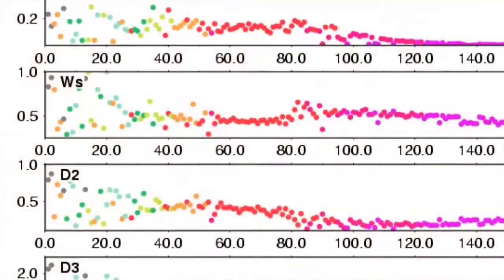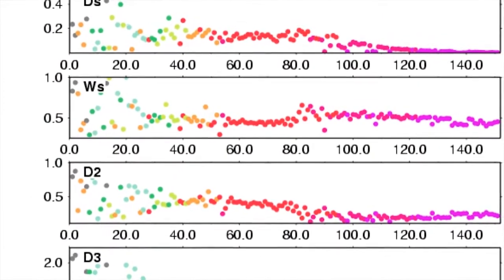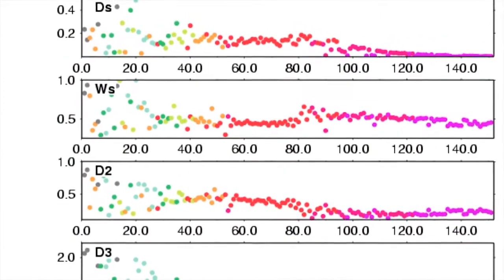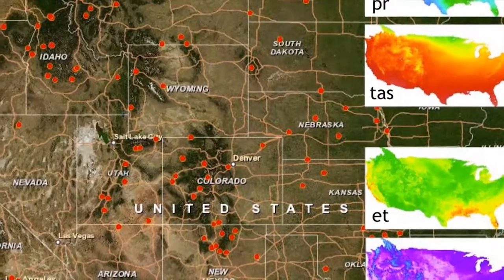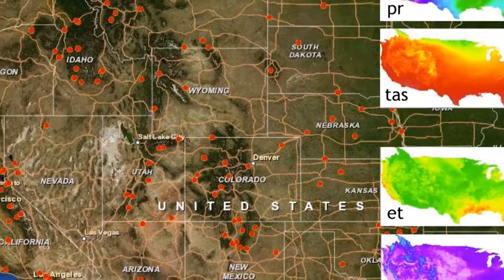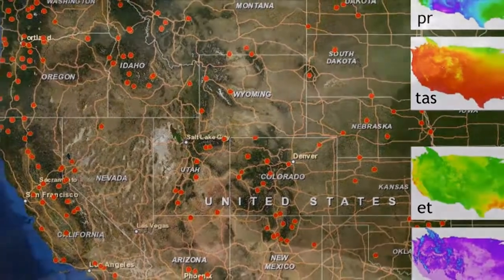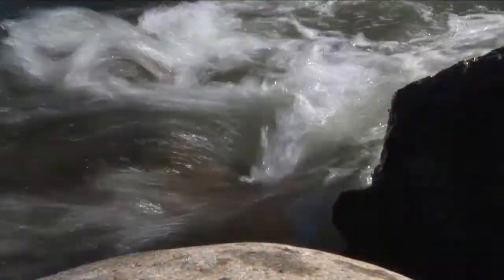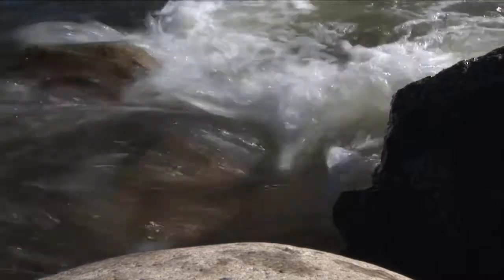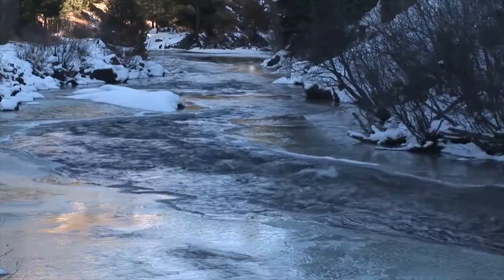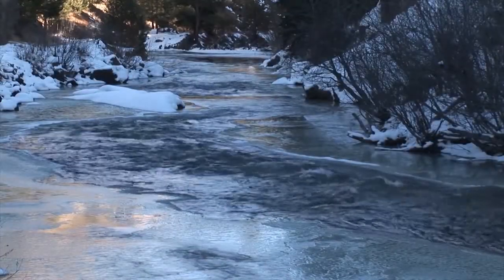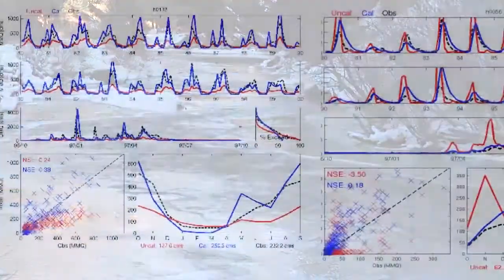Both of these involve taking climate model information, which is really too coarse to be useful for hydrology, and trying to get better information out of it so that we can run hydrology models and come up with a more realistic assessment — both of how hydrology will change and what our uncertainty of those changes is.